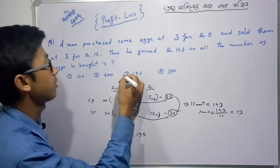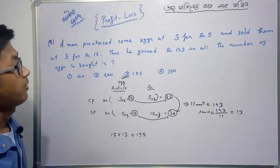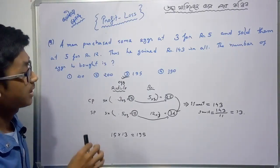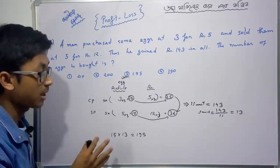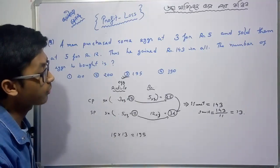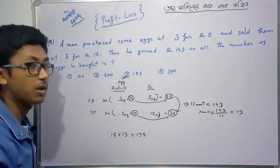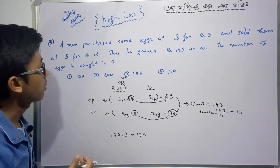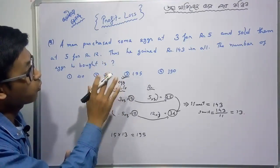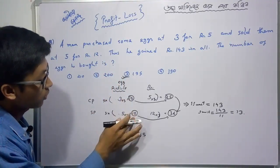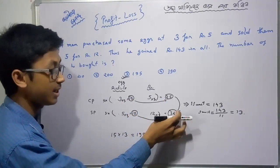So the option, 195. The problem is about ratio - 3 eggs for 5 rupees, sold at 5 for 5 rupees. The ratio helps us solve for the total. I will show you the method.